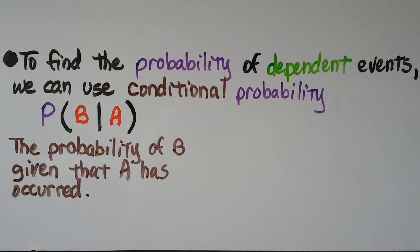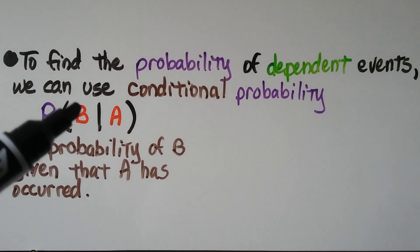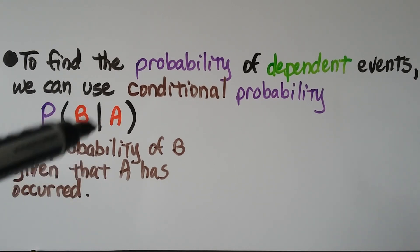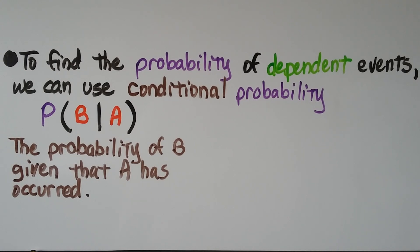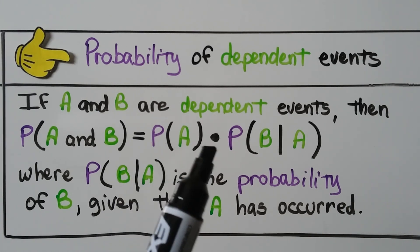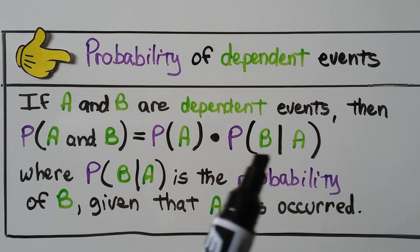To find the probability of dependent events, we can use conditional probability. We have the probability of B given that A has occurred — that's written as P(B|A) — which can also be read as the probability of B such that A has occurred. For your notes: if A and B are dependent events, then the probability of A and B equals the probability of A multiplied by the probability of B given that A has occurred.